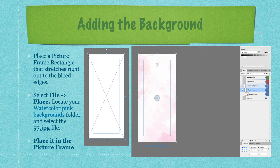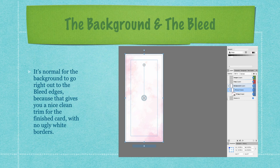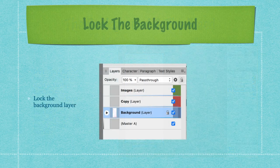Place the watercolor pink background into the picture frame. It's a pinkish background that fills the entire picture frame right out to the bleed edges. You do this because you don't want white edges around it — it's normal for the background to go right out to the bleed edges, giving a nice clean trim with no ugly white borders. In the layers panel you'll see a background layer with a picture frame containing the 57.jpeg image.